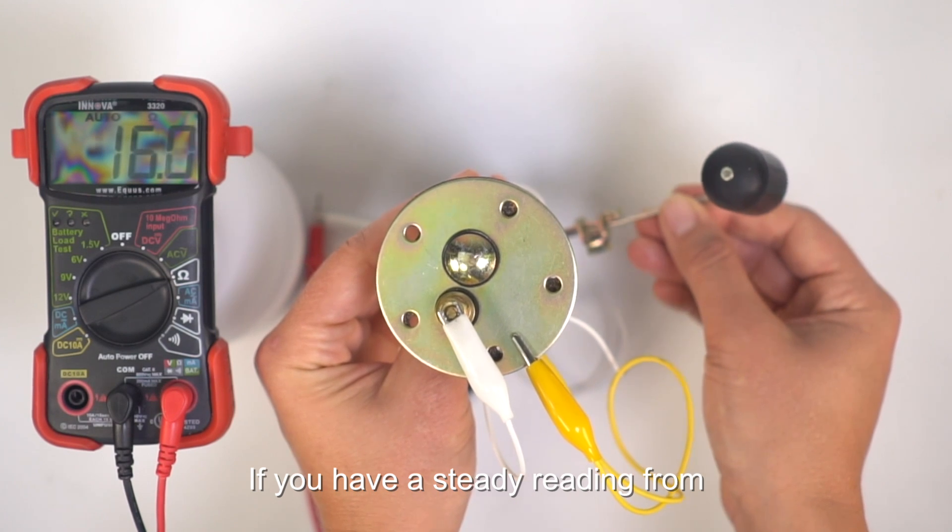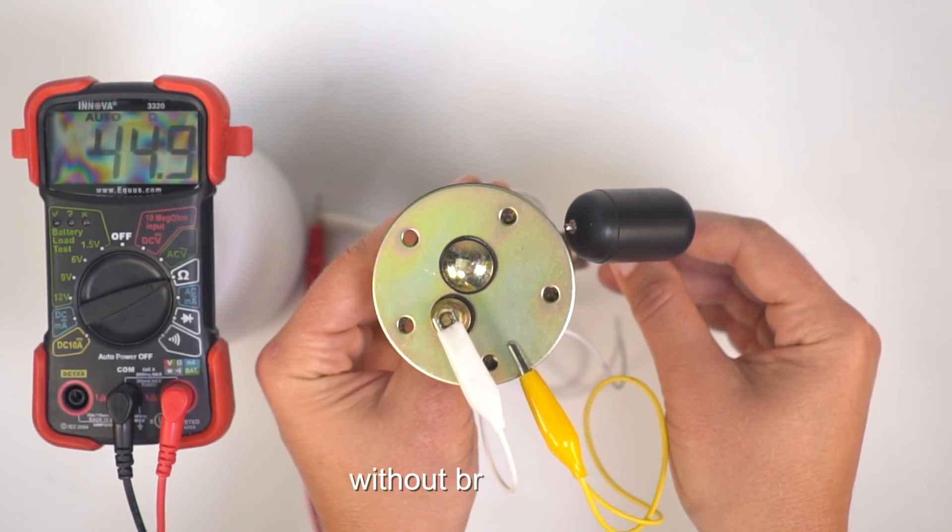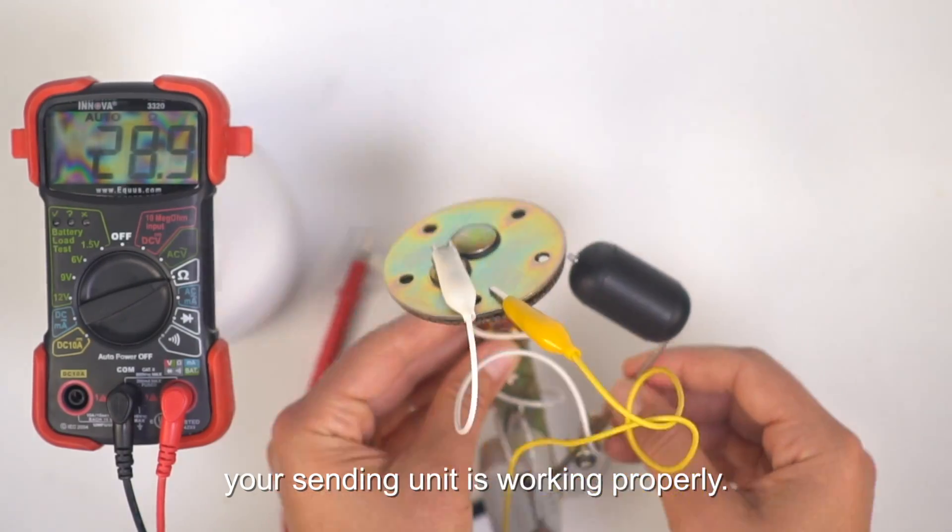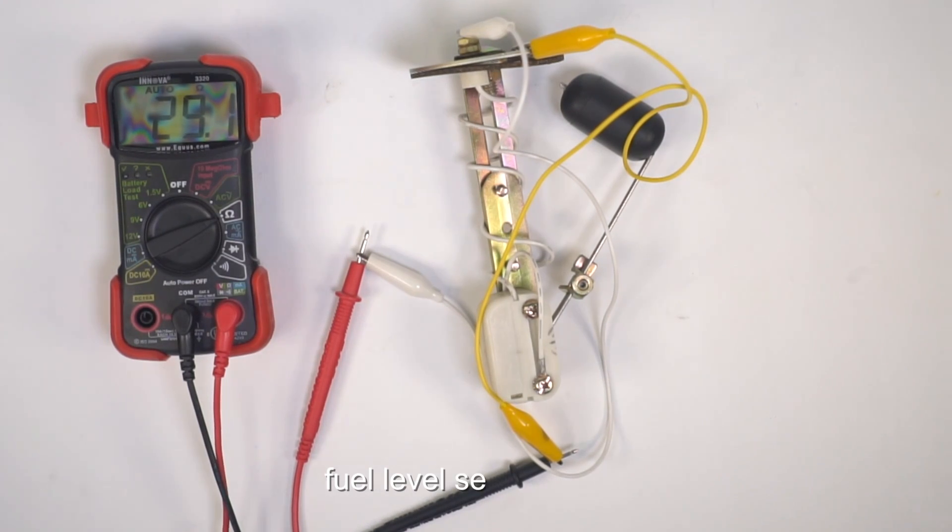If you have a steady reading from 240 to 33 ohms, or another ohm range, without breaks in it, your sending unit is working properly. That's how you test a resistance style fuel level sending unit.